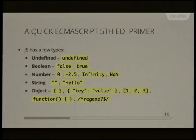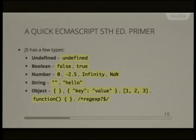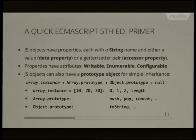Before showing snippets from the specification to illustrate these problems, here's a short primer on JavaScript fundamentals. JavaScript has a few primitive types like boolean, number, and string, and it has objects. Objects can have key-value properties on them. Arrays are objects. Functions are objects. Regular expressions are objects.